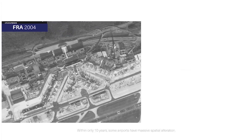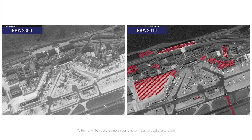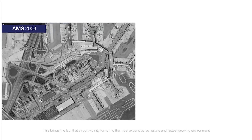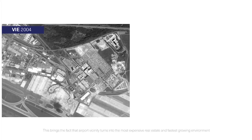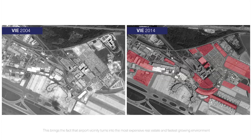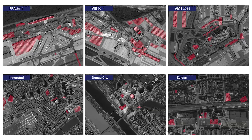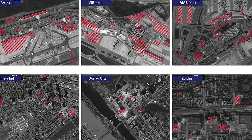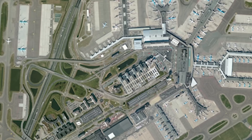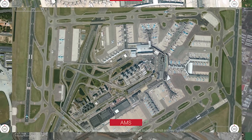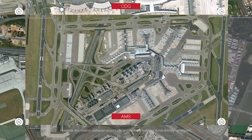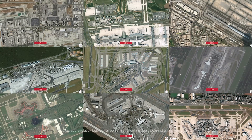Within only 10 years, some airports have massive spatial alteration. This brings the fact that airport vicinity turns into the most expensive real estate and fastest-growing environment, even compared to the city center and economical district in the same city. However, the relation between airport city and terminal building is not entirely synergistic.